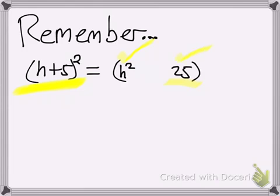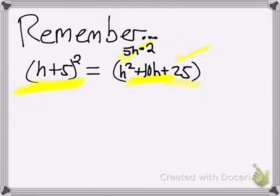The way you get the middle term — the blank spot — you take the terms of the binomial, 5 and h, and multiply them together and then double it. That's the key part: remember to double it. 5h times 2 is 10h. So that's how you figure out your answer when you are multiplying a special case like that.